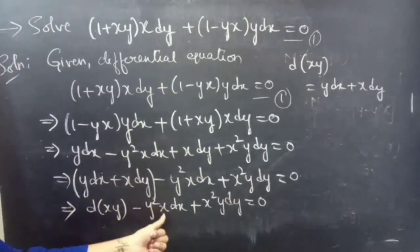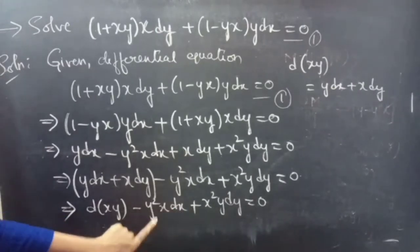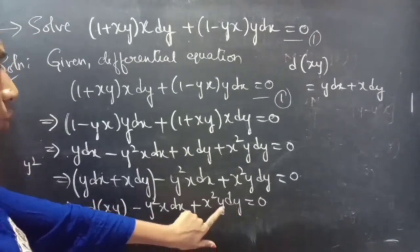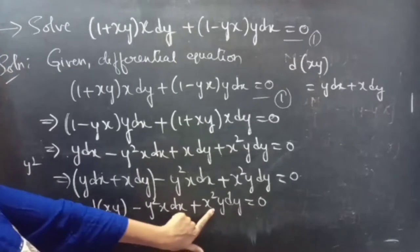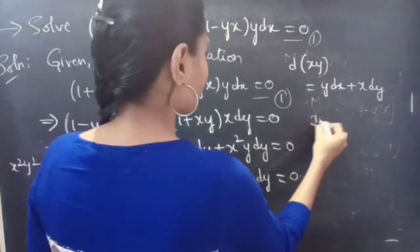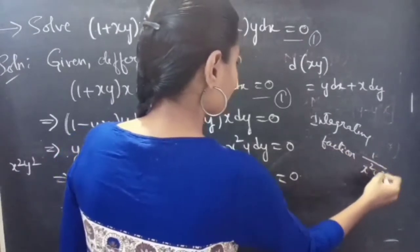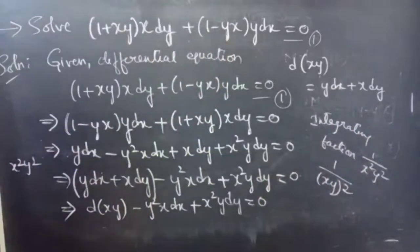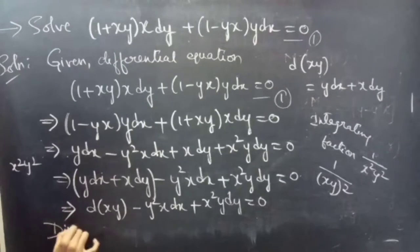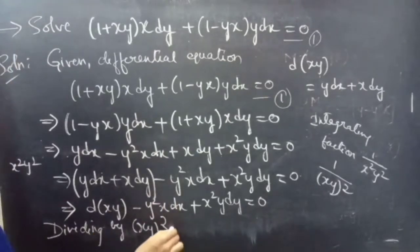Coming to the second term, we have y²x dx. Here if we have x dx it will be easy to integrate, but we need to eliminate y² from the second term. And for the third term, since we have dy it is easy to integrate y dy, but we need to eliminate x². So what we are going to do is multiply the whole equation by the integrating factor 1/(x²y²), or equivalently dividing by (xy)².